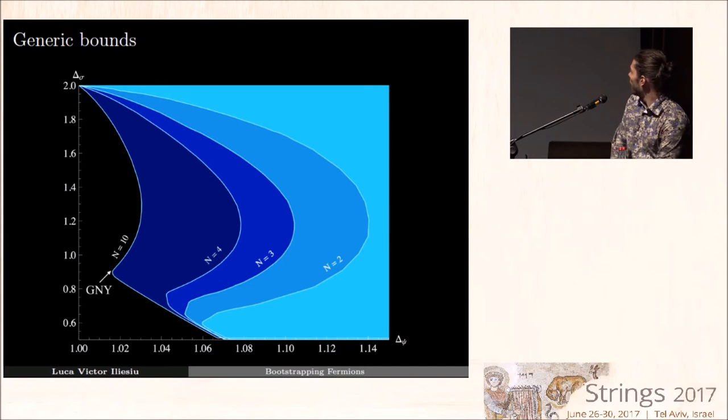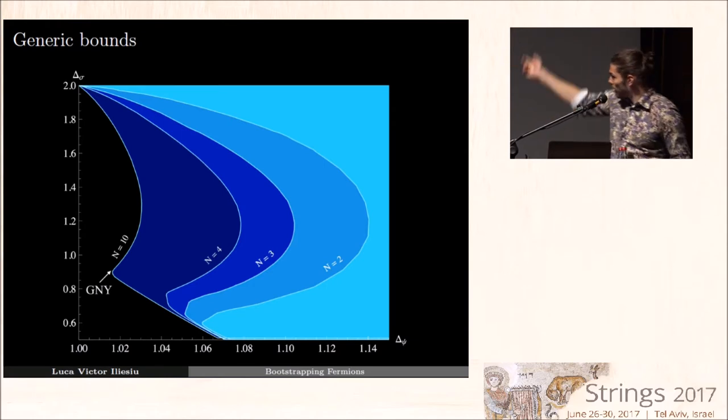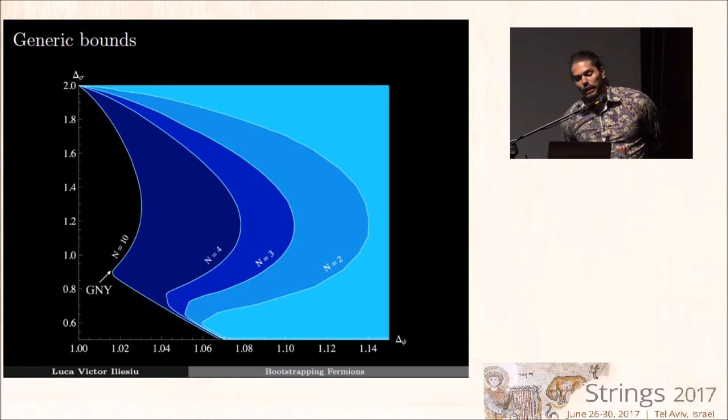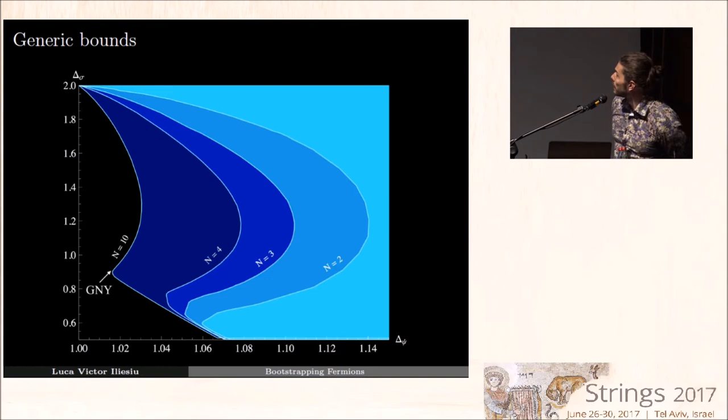On the x-axis, we have the scaling dimension of the lowest fermion in the theory, while on the y-axis we have the dimension of sigma, which in the Gross-Neveu-Yukawa theory was the parity-odd scalar. This plot also assumes that the second parity-odd scalar is irrelevant. The blue shows allowed regions, while the black shows disallowed regions. So wherever there is black, there cannot be a CFT with a global ON symmetry.